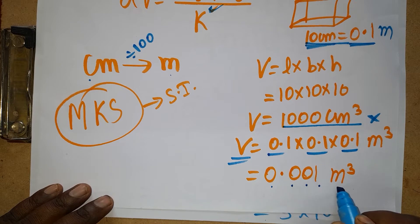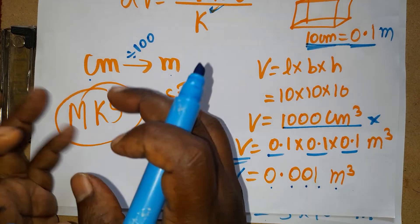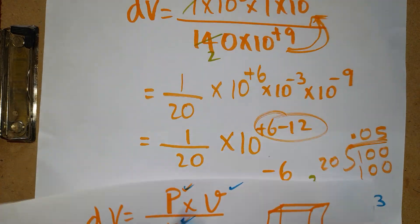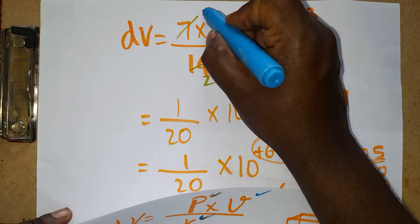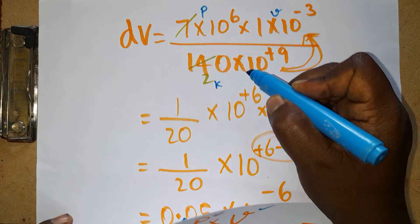I got the volume. The problem should always be done in MKS system. That is a very important thing you should follow when solving the problem. Now we have pressure, bulk modulus, and volume. We are going to find the changing volume.